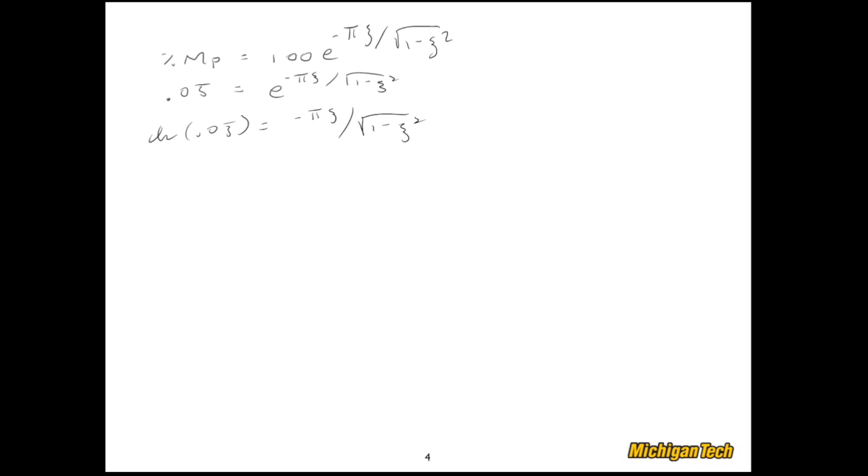And then solve for zeta squared and take a square root, square both sides of this, etc. The other thing we could do is just plot zeta versus percent mp, percent overshoot. We'll get a plot that looks something like this. And then we can just look up the percent overshoot we want and go down and pick off the zeta. So let's just take a quick look at that in MATLAB.